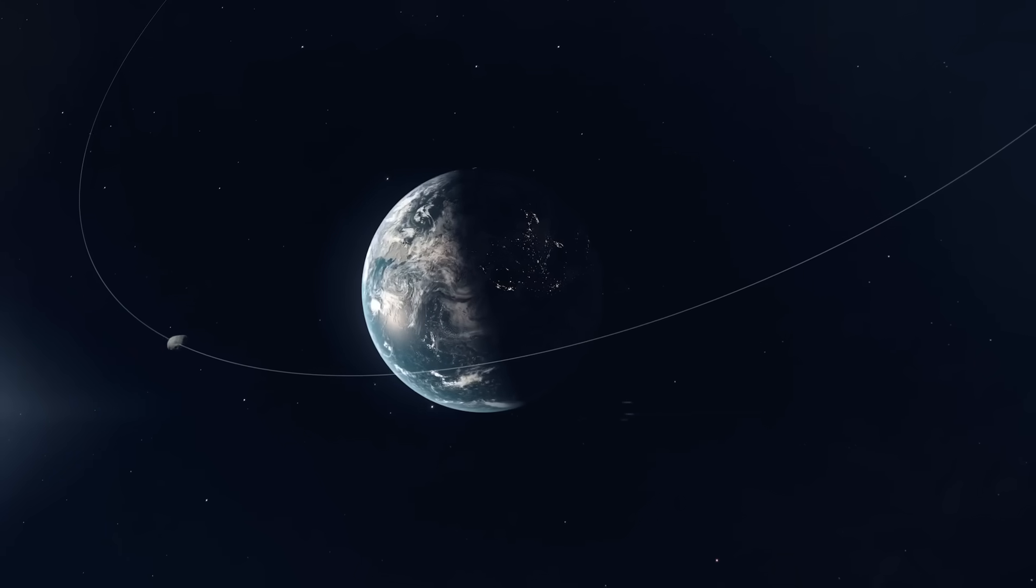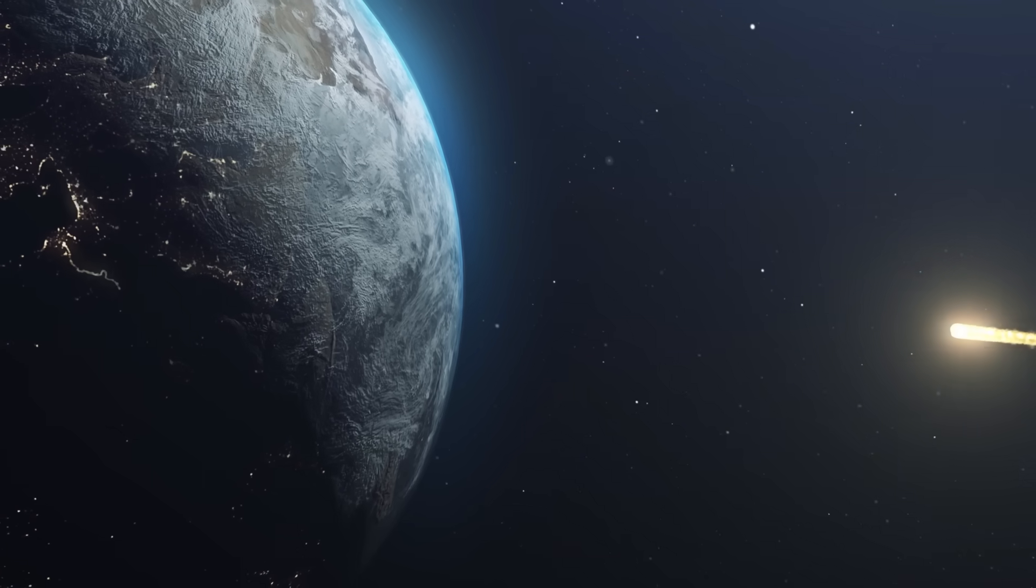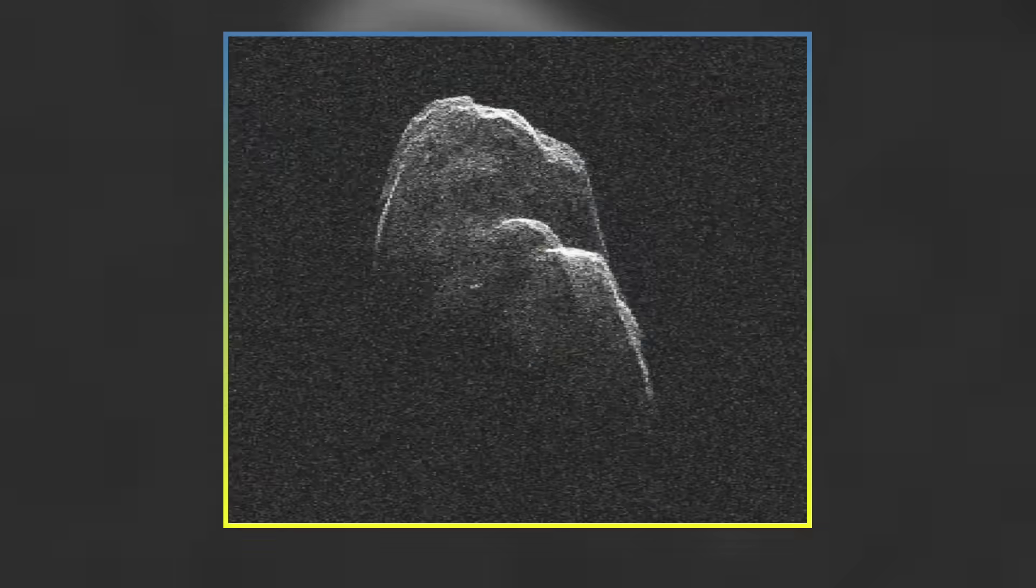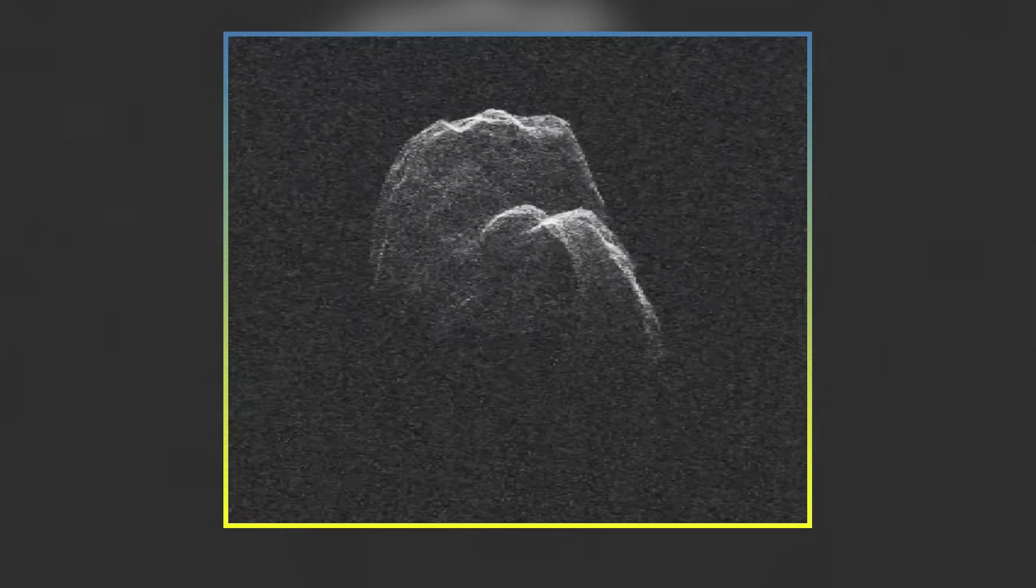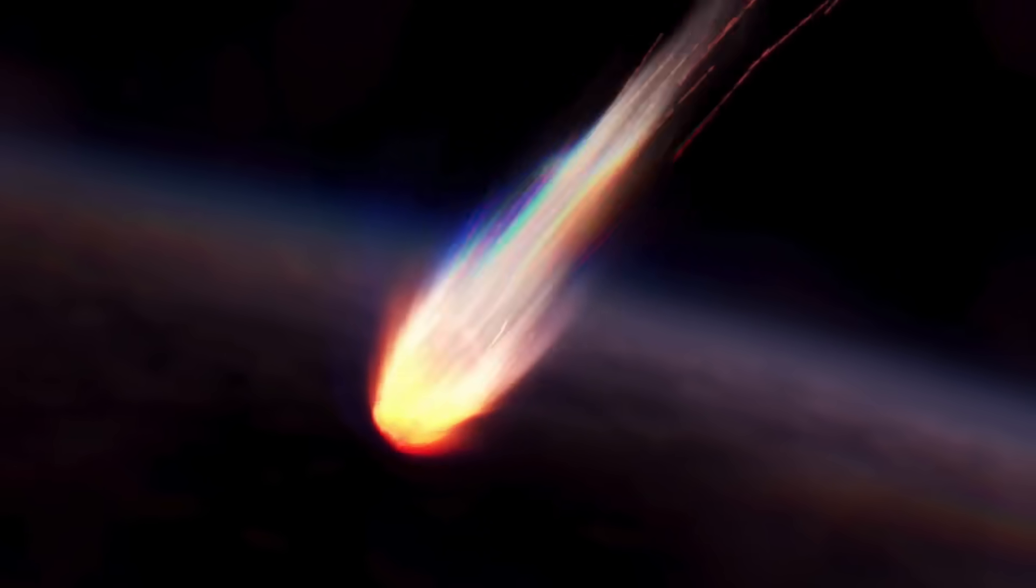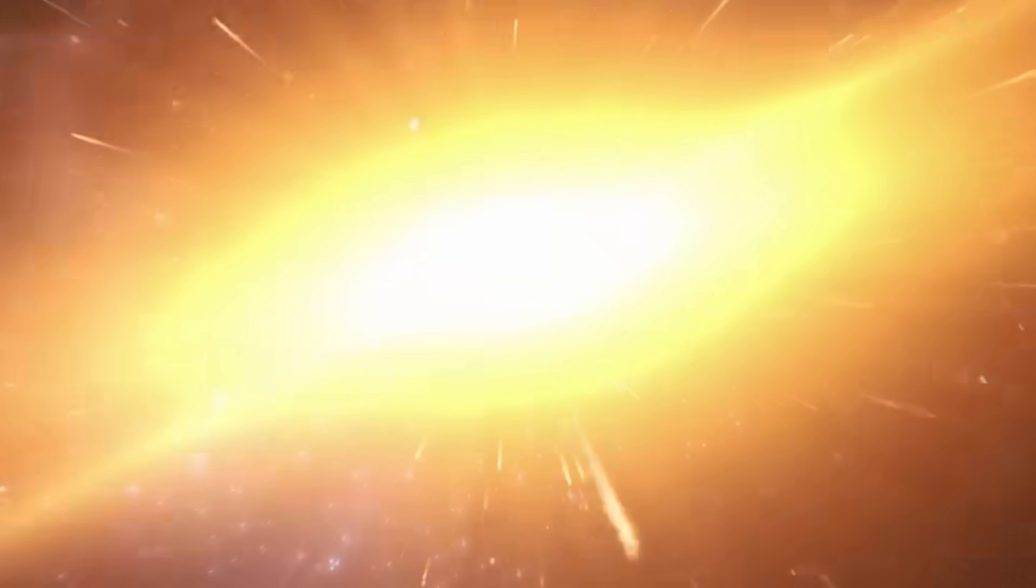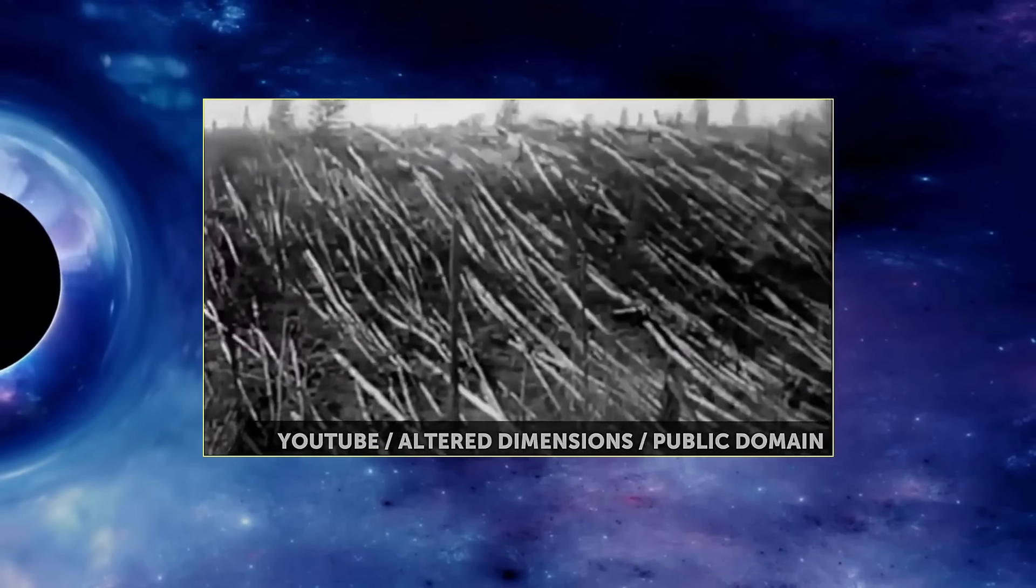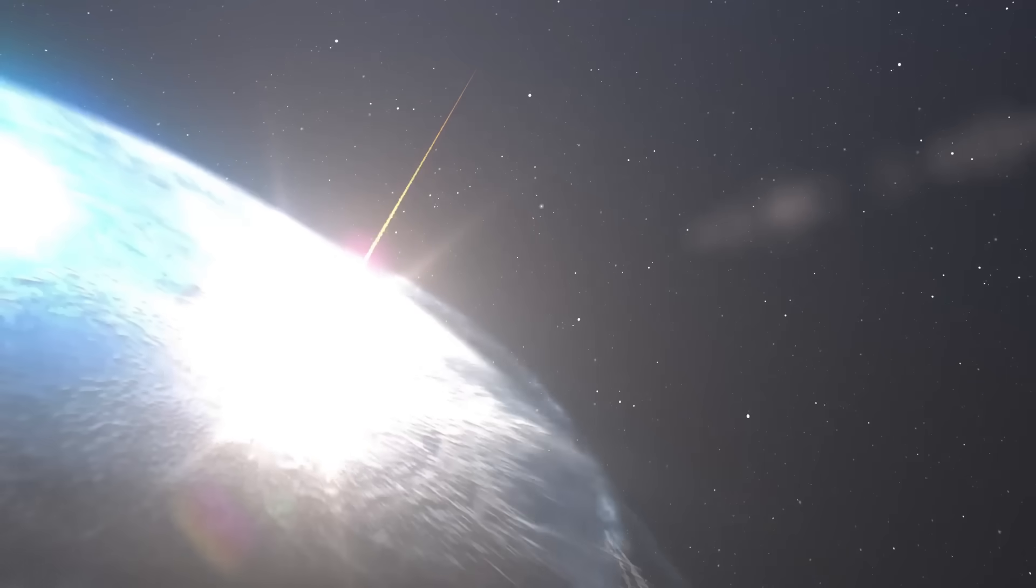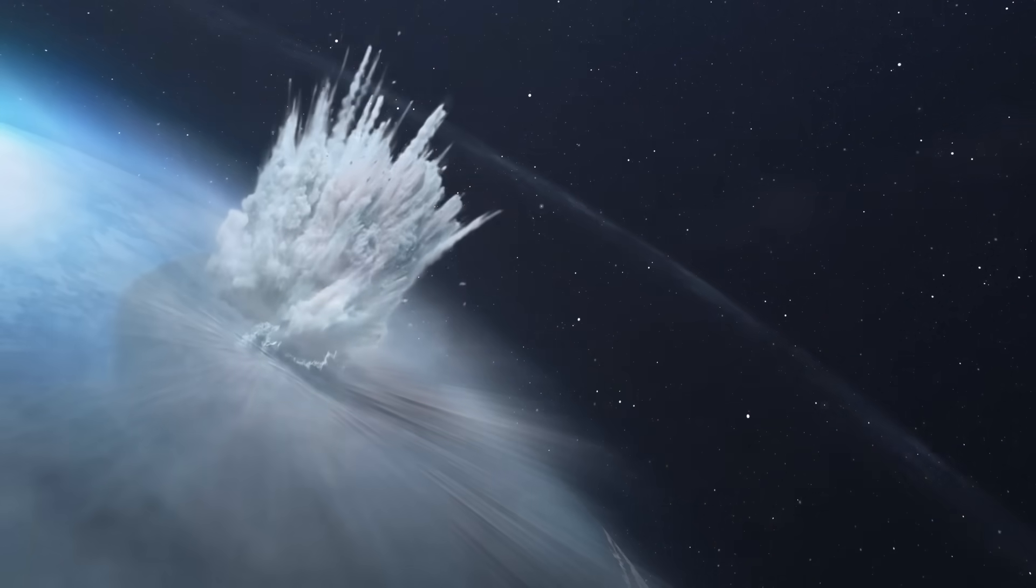But what if asteroid 2024 YR-4 were to strike Earth? Calculations suggest that if it were to strike Earth, asteroid 2024 YR-4 wouldn't end life on Earth as we know it, as it's not large enough to do that. But it could be locally destructive, depending on where it hits. The impact could be comparable to the 1908 Tunguska event, where a powerful explosion, estimated between 3 and 50 megatons, occurred over Siberia, flattening approximately 80 million trees across 830 square miles of forest.